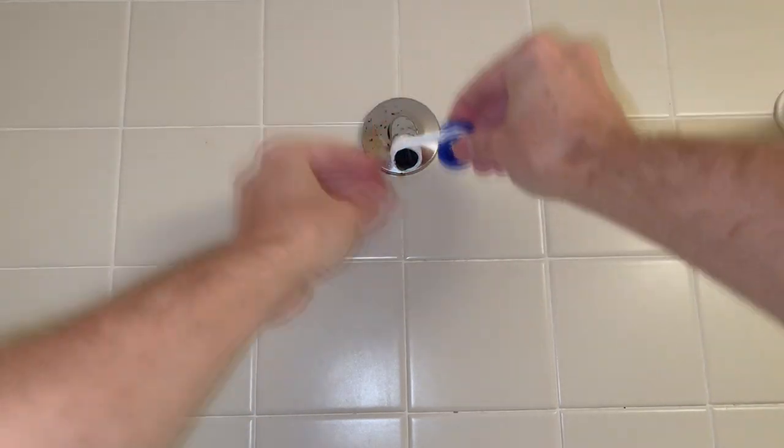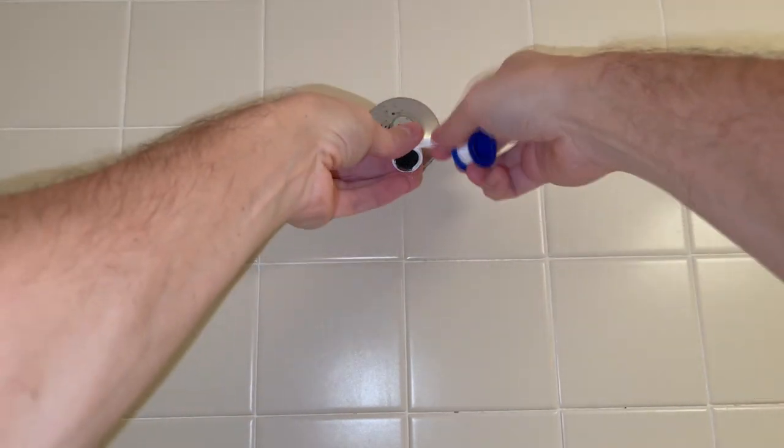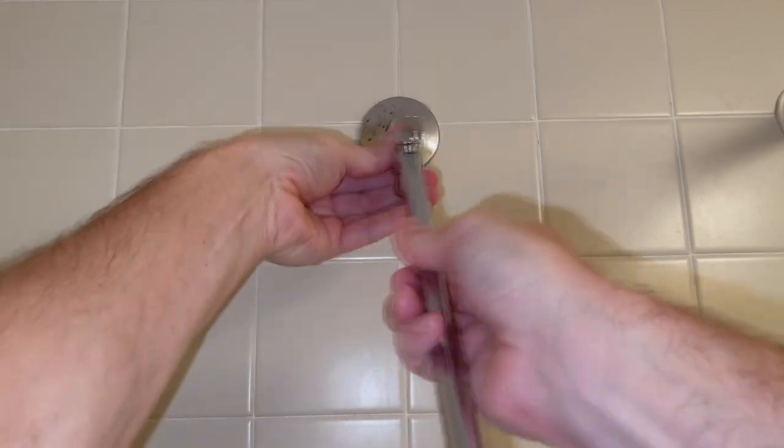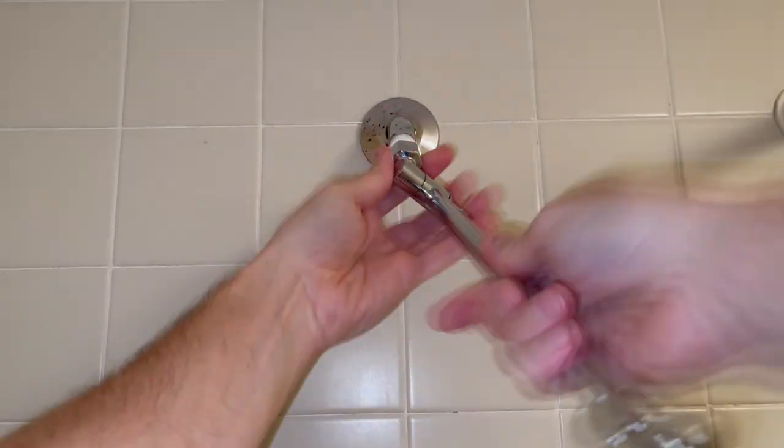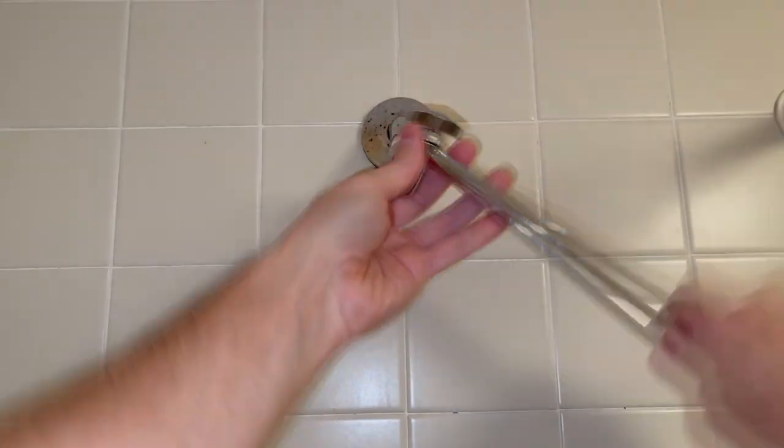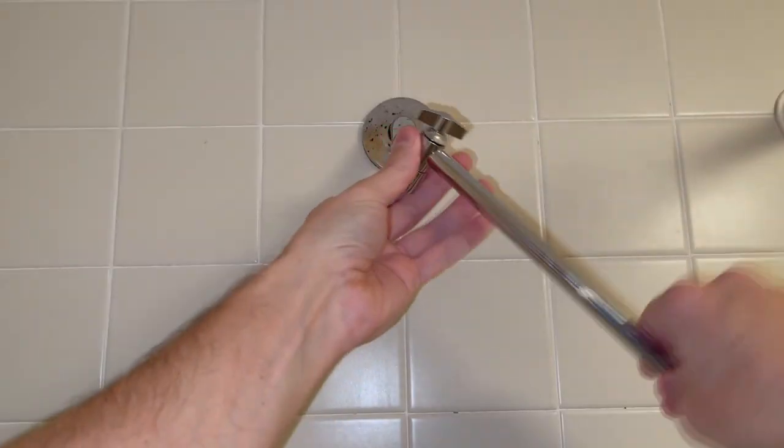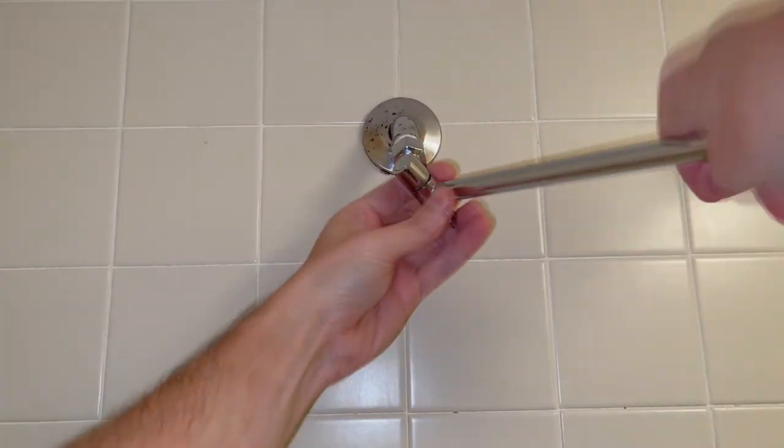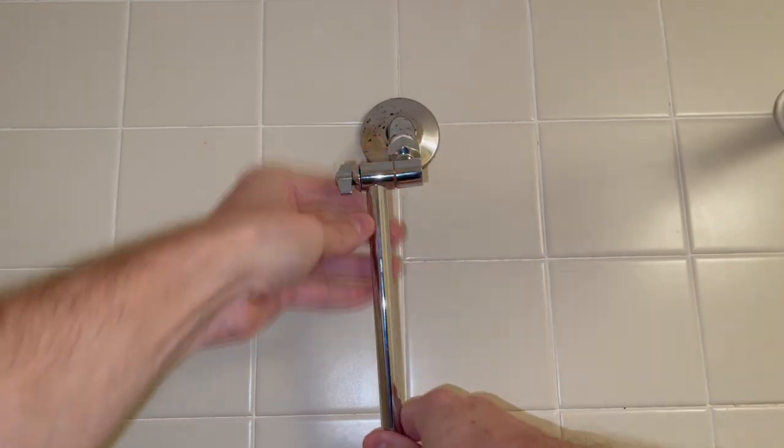So I'll get about five more layers of the teflon tape and screw this shower extension pipe back on once again. And at this point I can actually feel that it's going much tighter than before. And I just have to stop at the right place without making any counter moves.